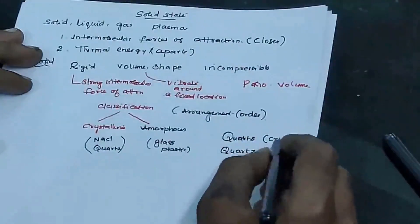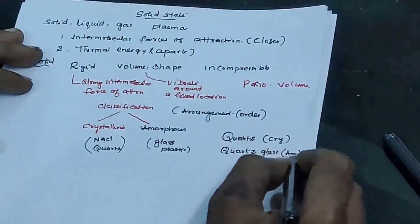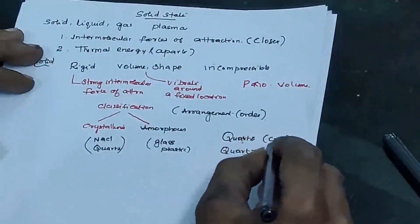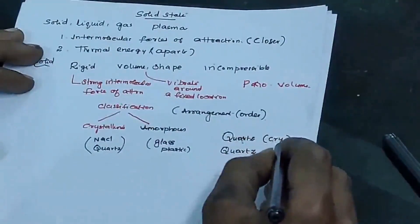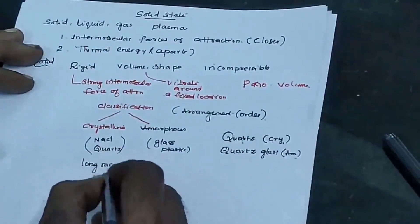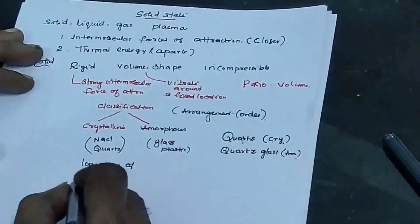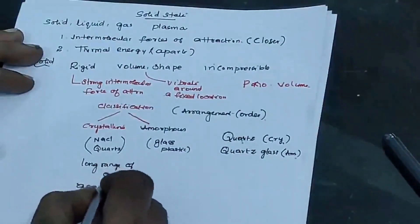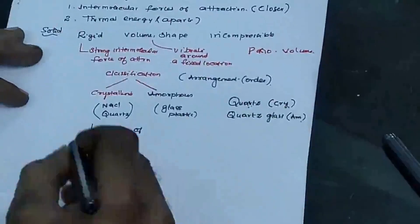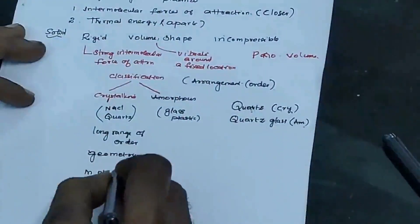To distinguish: quartz is crystalline and quartz glass is amorphous. In quartz, the particles — that is, atoms or molecules — are arranged in a long range of order. Due to this long range of order, they have definite geometry, that is, a definite shape. Due to definite geometry, they possess a definite melting point and boiling point.